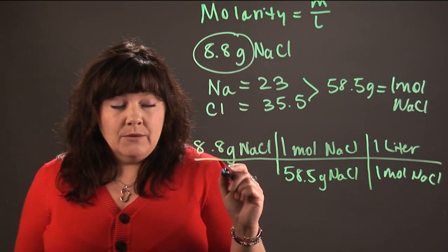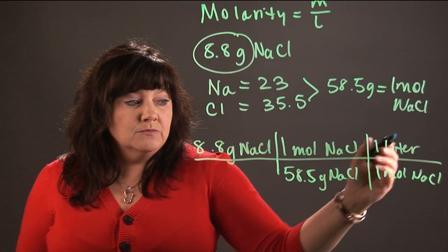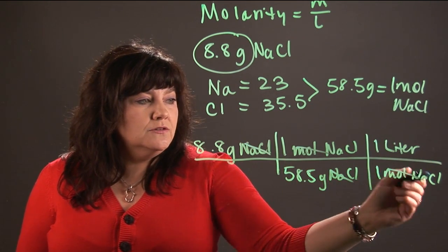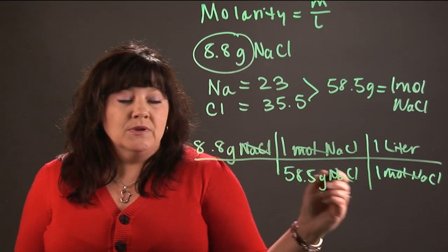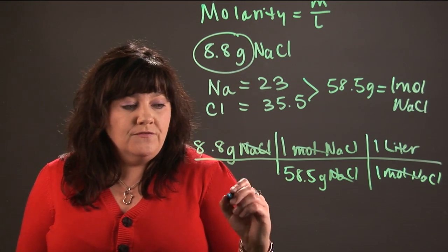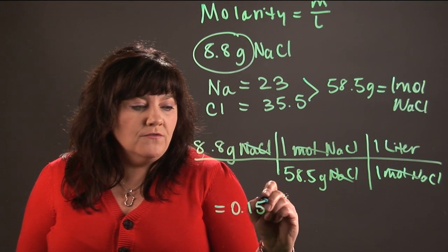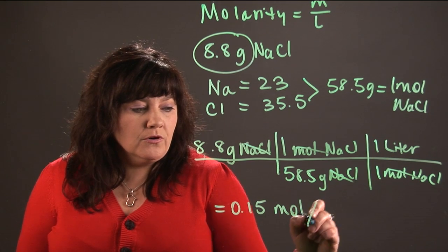Now I'm going to check myself to make sure that my units cancel and all I'm left with is my liters over here. So let's see, those cancel, those cancel. Okay, now I can do my math. So I'm going to take 8.8 and I'm going to divide it by 58.5, and that's going to give me 0.15 moles per liter.